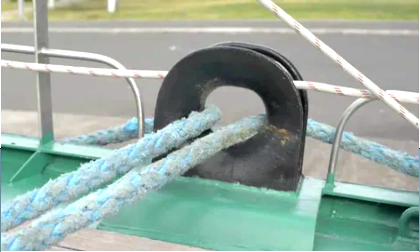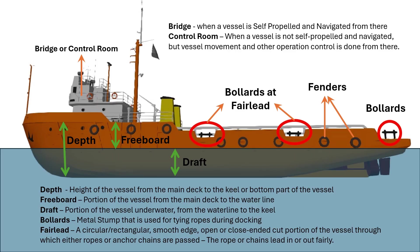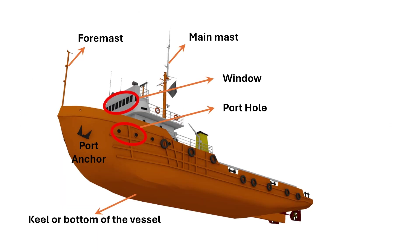Fairleads are gateways in various shapes and sizes — holes or gaps at the side of the vessel with a rounded smooth edge. Generally, ropes and cables pass through them and are then tied at the bollards. The bottom part of the vessel is called the keel.